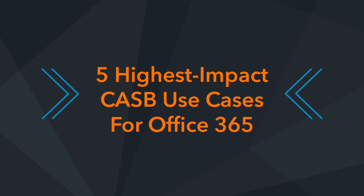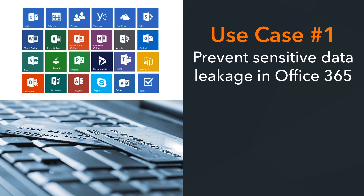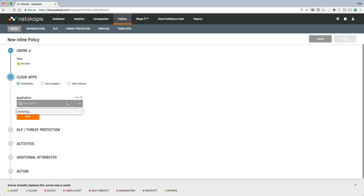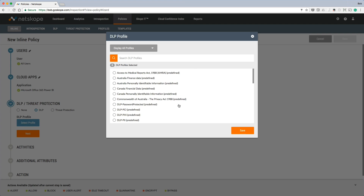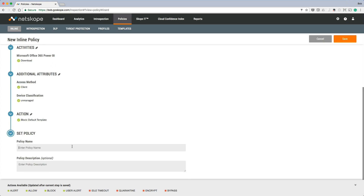Netscope's architecture provides unparalleled visibility and control of Office 365. Let's take a look at five common use cases that demonstrate this. The first use case is preventing sensitive data from leaking in and out of Office 365. Unlike other CASBs that are limited to OneDrive and SharePoint, Netscope supports DLP inspection of dozens of apps in the Office 365 suite, providing the industry's most powerful DLP with unmatched coverage and accuracy. Let's select one of the Office 365 apps — in this case, we want to prevent PCI from being downloaded from Power BI. With this policy in place, we will protect against PCI data loss in Power BI.